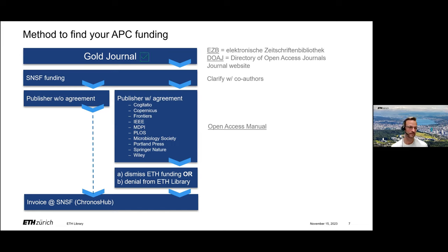If it's a gold journal, then check. Clarify in advance of submission or acceptance with your co-authors whether someone has an SNSF grant. If anybody has an SNSF grant, then check. If there is no agreement, or an agreement which does not include your journal, then check in the left column. If there is an agreement and it includes your journal, you are in the right column. If both questions can be answered with yes, then check. You can find detailed information about each publisher and which journals are included or excluded from agreements in our online open access manual.